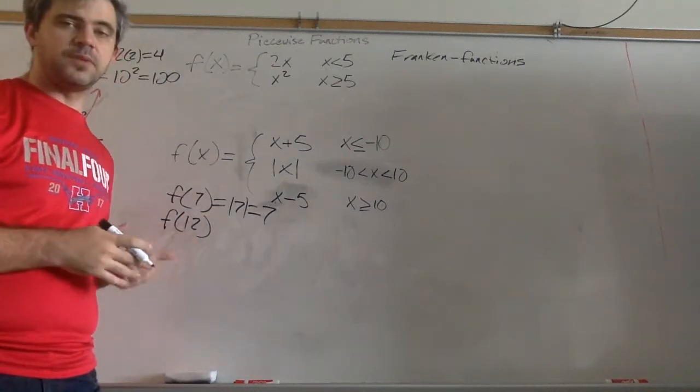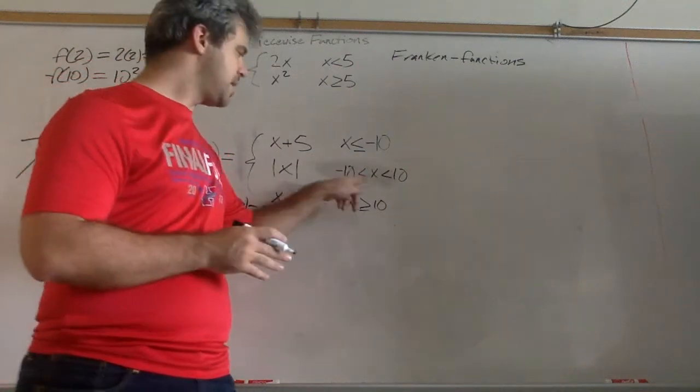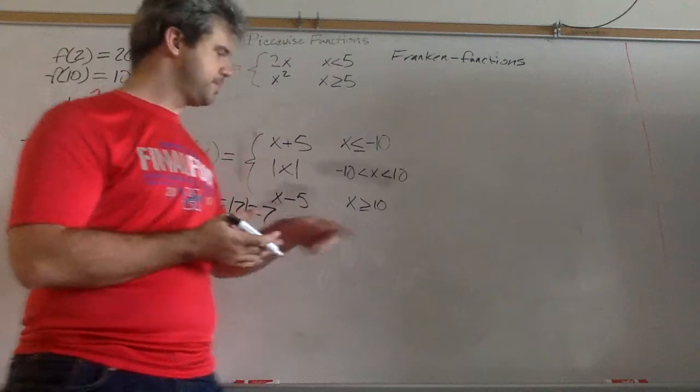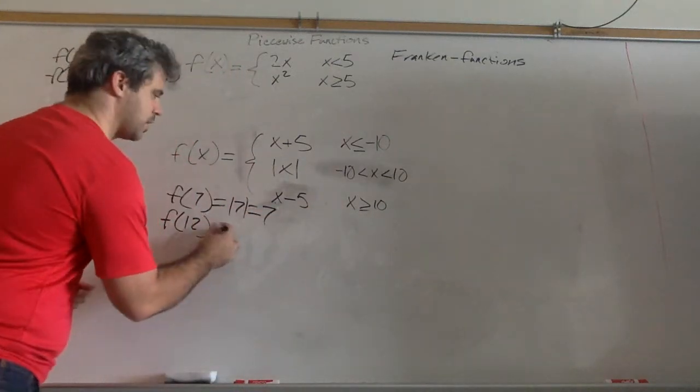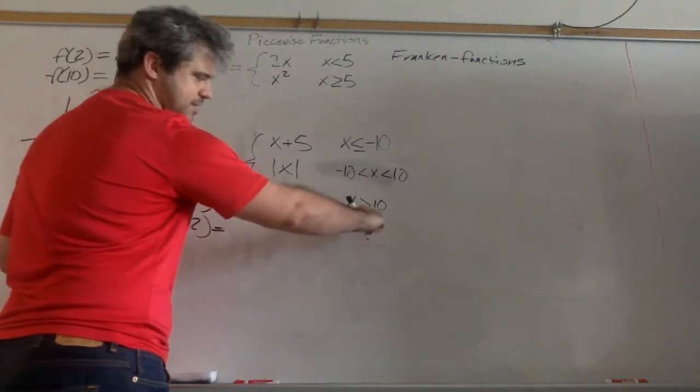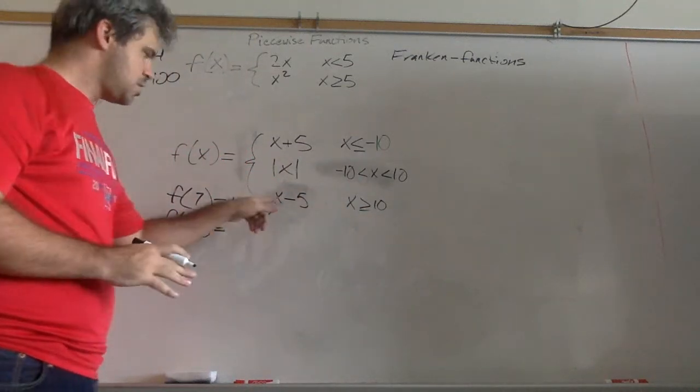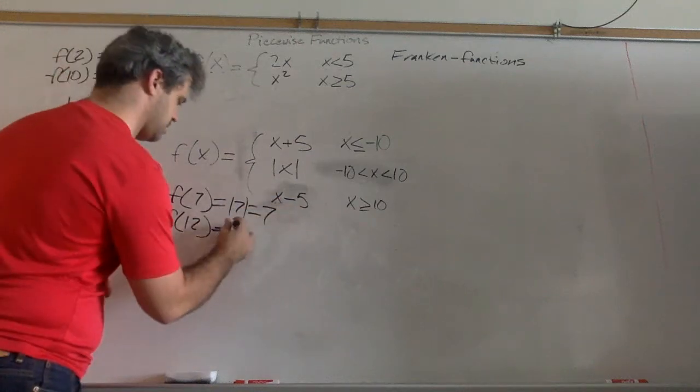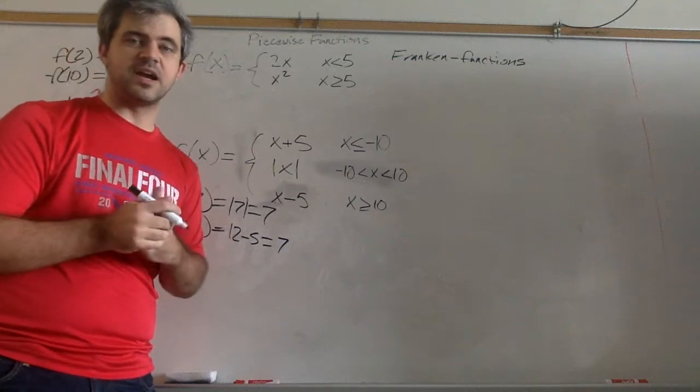f of 12: is 12 less than or equal to 10? Nope. Is 12 between these two? Nope. Is 12 bigger than 10? Yes. So we're going to use this third rule because that's the rule we're supposed to use when x is bigger than 10. So 12 minus 5 also equals 7. A little coincidence there.